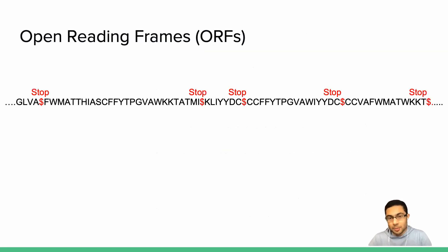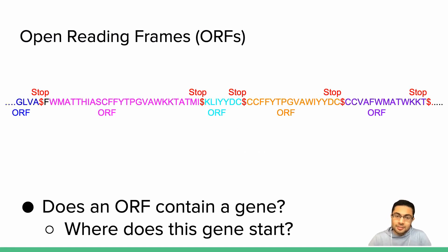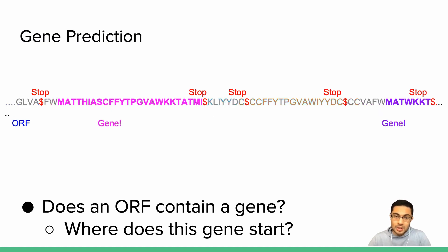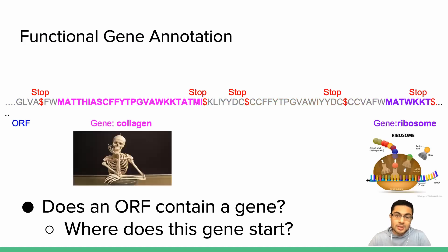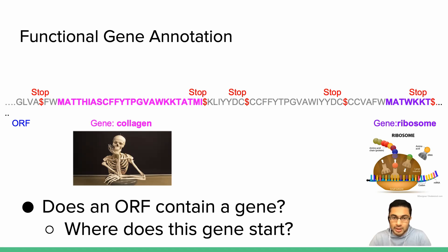Here we have an example of a translated open reading frame, and looking at this, two questions come to mind. First, does this open reading frame contain a gene? And second, if so, where is this gene located? We can answer these questions by parsing our open reading frame and looking for substrings that begin with a start codon and end with a stop codon. Then, similar to how we've used BLAST to search nucleotide sequences, we can query our potential protein sequences against massive databases of annotated protein sequences to find identical or highly similar proteins, and use these matches to predict properties and functions of the proteins we found.